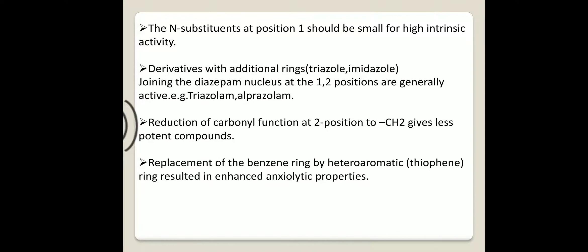The N-substituent at position 1 should be small for high intrinsic activity. Derivatives with additional rings — i.e., triazole and imidazole — joining the diazepam nucleus at the 1st and 2nd positions are generally active. Examples include triazolam and alprazolam.